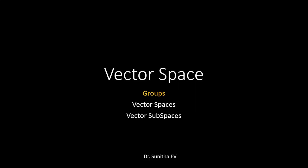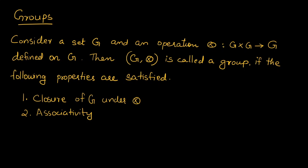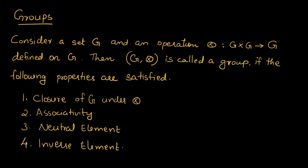Today we are going to see the topic vector space. In order to understand vector space, first of all we have to know what groups are. Consider a set G and an operation star such that G cross G gives G, defined on set G. Then G star is called a group if the following properties are satisfied. There are four properties: closure of G under star, associativity, neutral element, and inverse element.